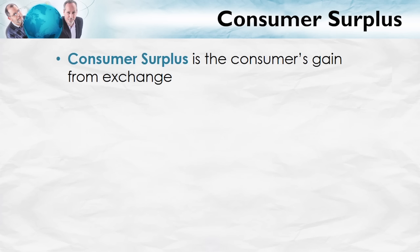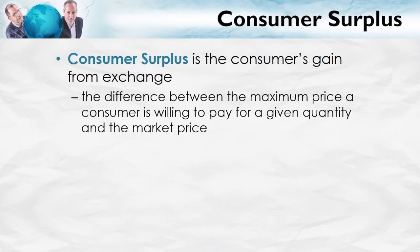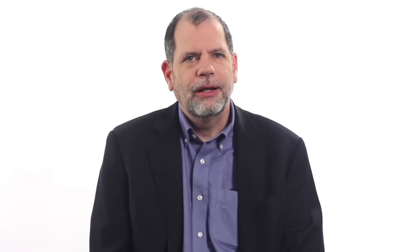One further important concept for this lecture is consumer surplus. Consumer surplus is the consumer's gain from exchange — it's the difference between the maximum price a consumer is willing to pay for a given quantity and the market price the consumer actually has to pay. Total consumer surplus is the sum of the consumer surplus of all buyers. Graphically, consumer surplus is measured by the area below the demand curve and above the price. With a diagram, this will become clearer, and it also gives us a chance to practice reading a demand curve vertically.